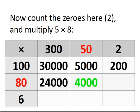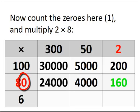Now count the zeros here. There's two, one in the 50, and one in the 80. Multiply the five by the eight, give you 40. So you've got 40, followed by two zeros, 4000. Count the zeros here. There's only one in the 80. So you multiply the two by the eight, gives you 16, followed by one zero, 160.